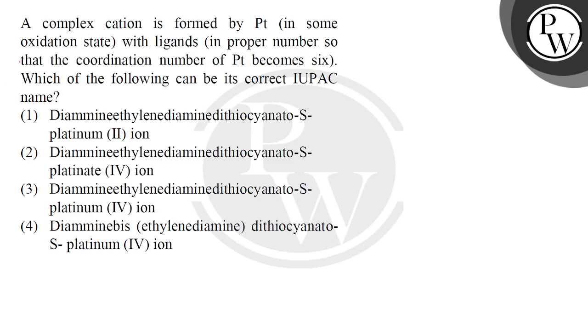Hello students, let's see this question. The question says a complex cation is formed by platinum in some oxidation state. This is the information that platinum is making a complex in a certain oxidation state with ligands in proper numbers so that the coordination number of the platinum becomes six. We will ligate some ligands from this platinum such that the coordination number of platinum is six, meaning it will bind with six ligands in this coordination sphere. Which of the following can be its correct IUPAC name?